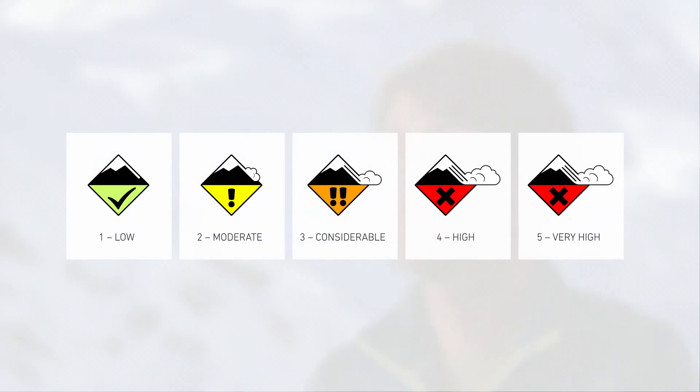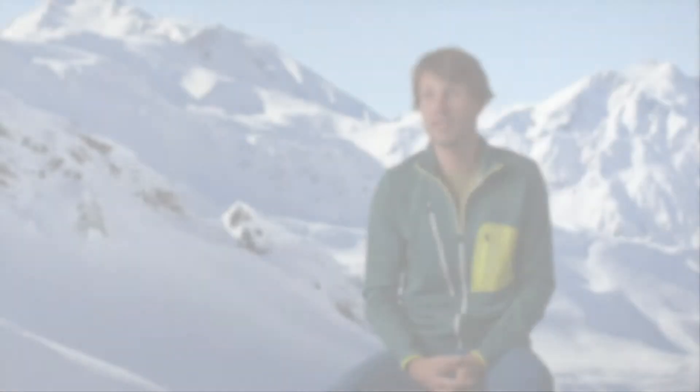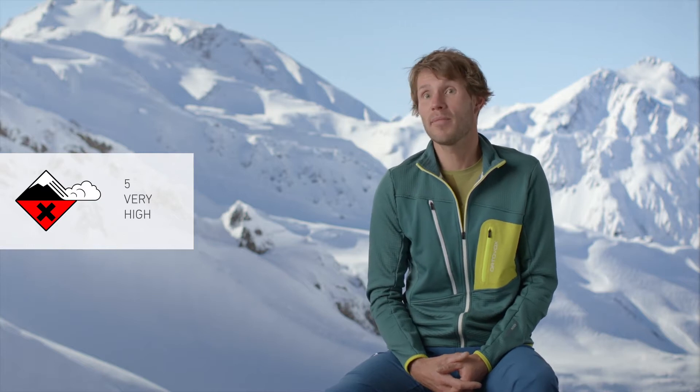Of the five danger levels, the first four — one to four — are important for winter athletes. When it gets to level five, very high, we usually won't even be able to reach the skiing area because the road is closed or perhaps because a disaster has occurred.